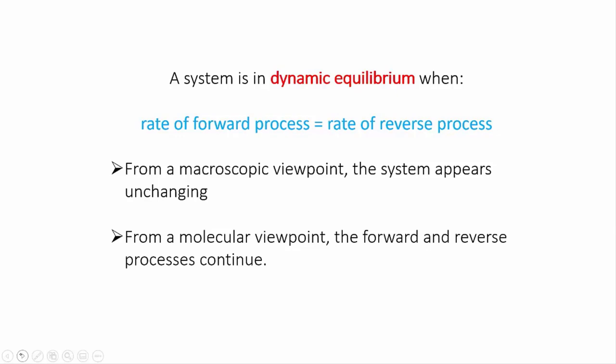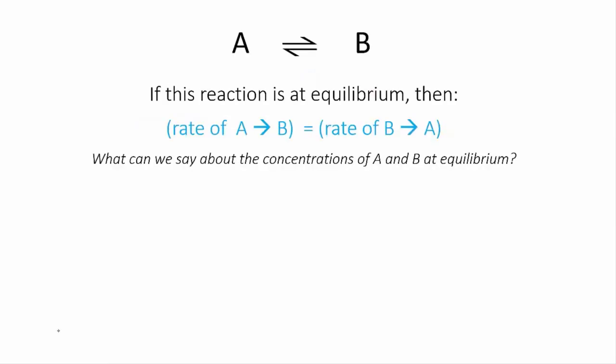In this video, we'll focus on chemical reactions. So let's take a hypothetical reversible reaction, A goes to B. If this reaction were at equilibrium, it would mean that the rate of A turning into B was equal to the rate of B turning into A.